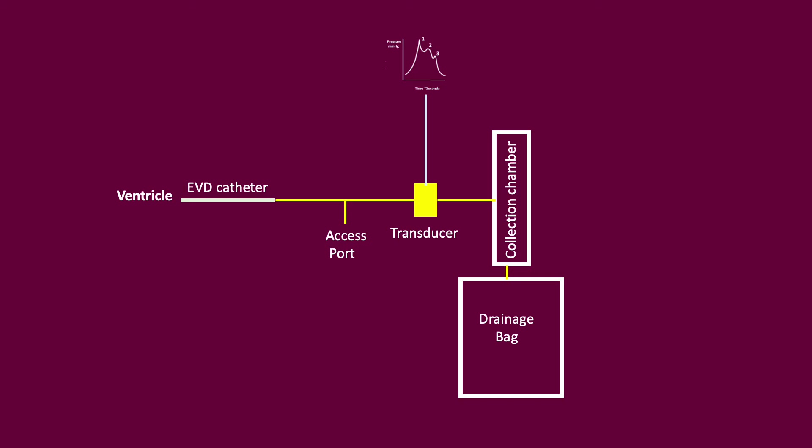Moving from the patient to the drain, as shown in the diagram: the EVD catheter is placed in the ventricle and connected to the EVD tubing. Within the tubing there are multiple three-way access points, followed by a transducer to enable pressure measurement displayed in graphical form, which requires levelling and zeroing. There may be additional access points before the collection chamber to determine output, and there is also a drainage bag.